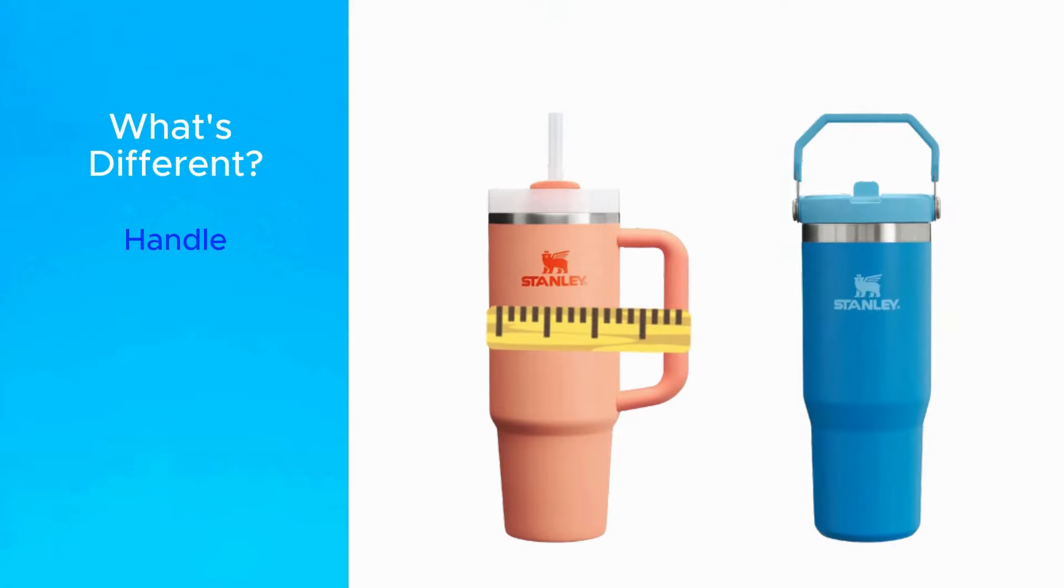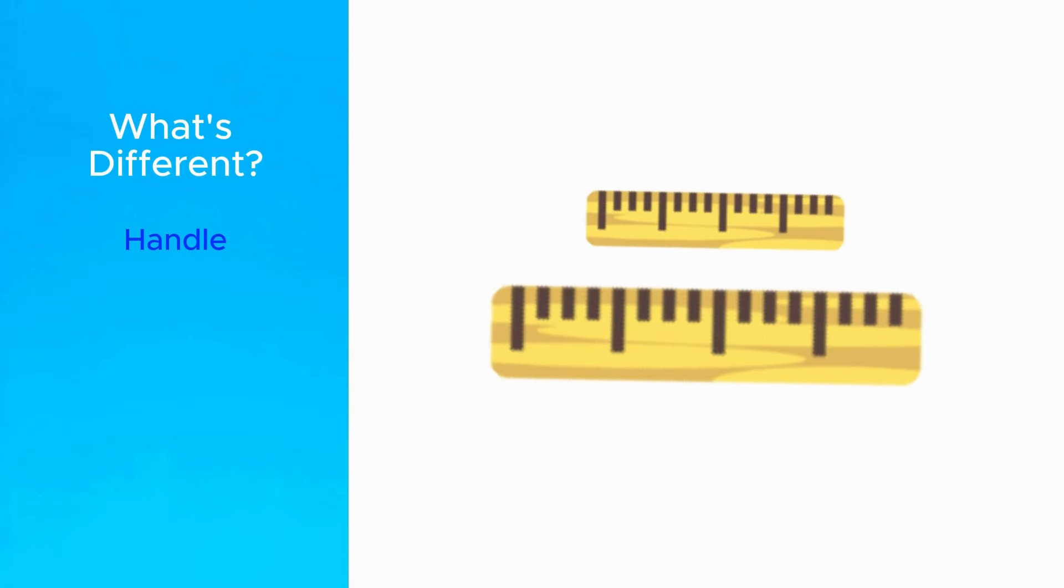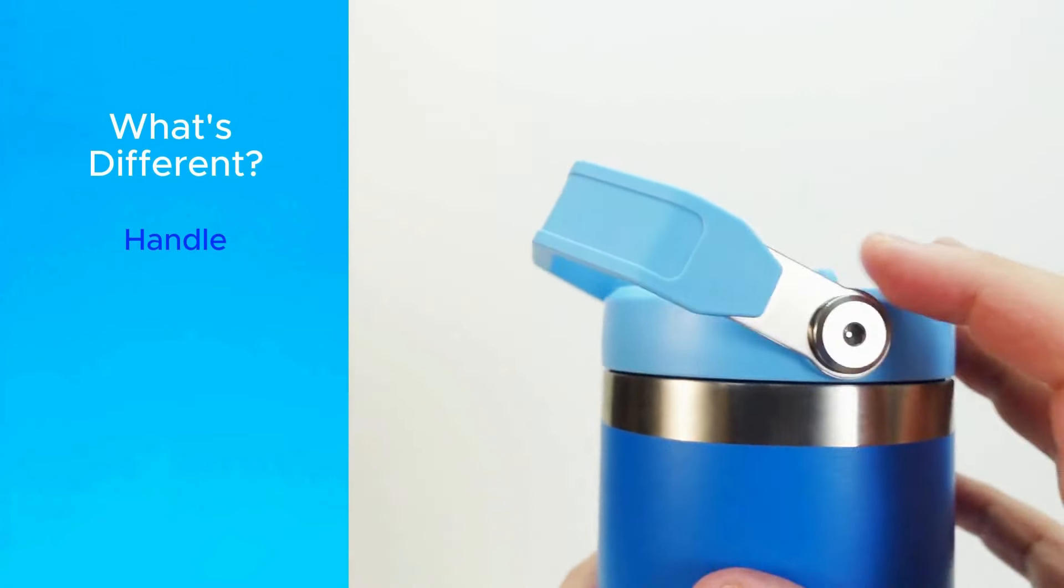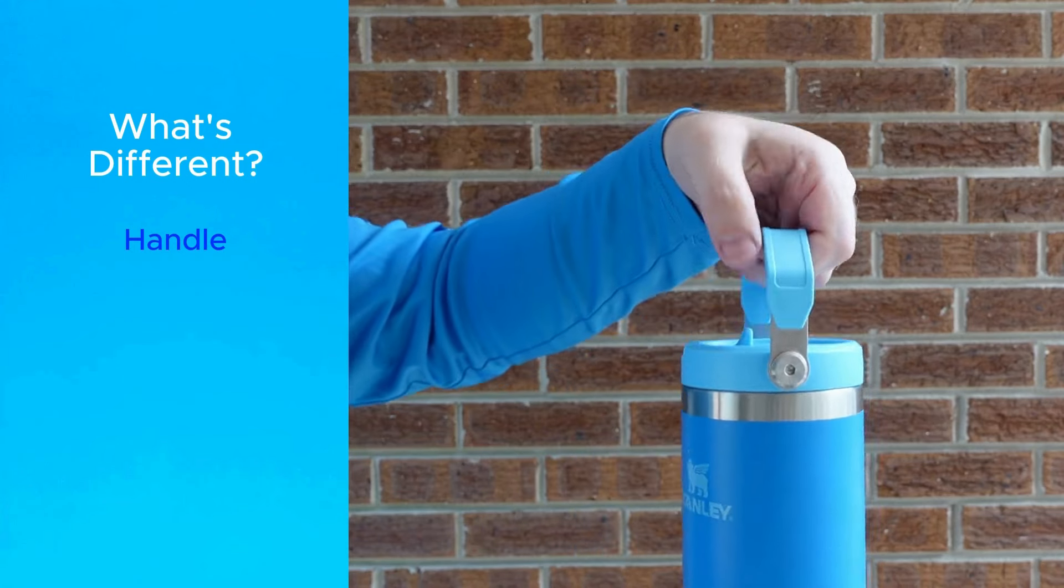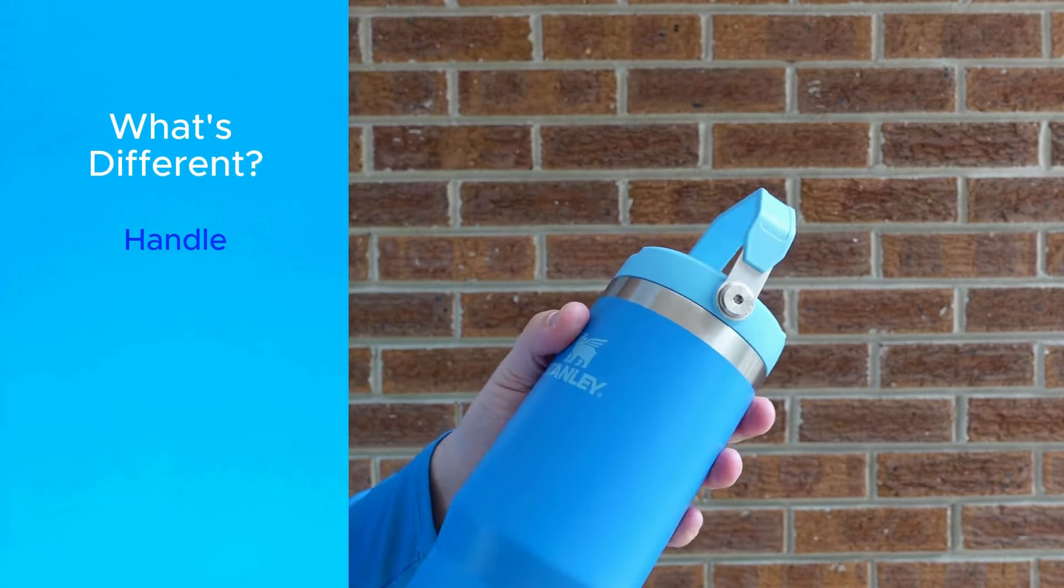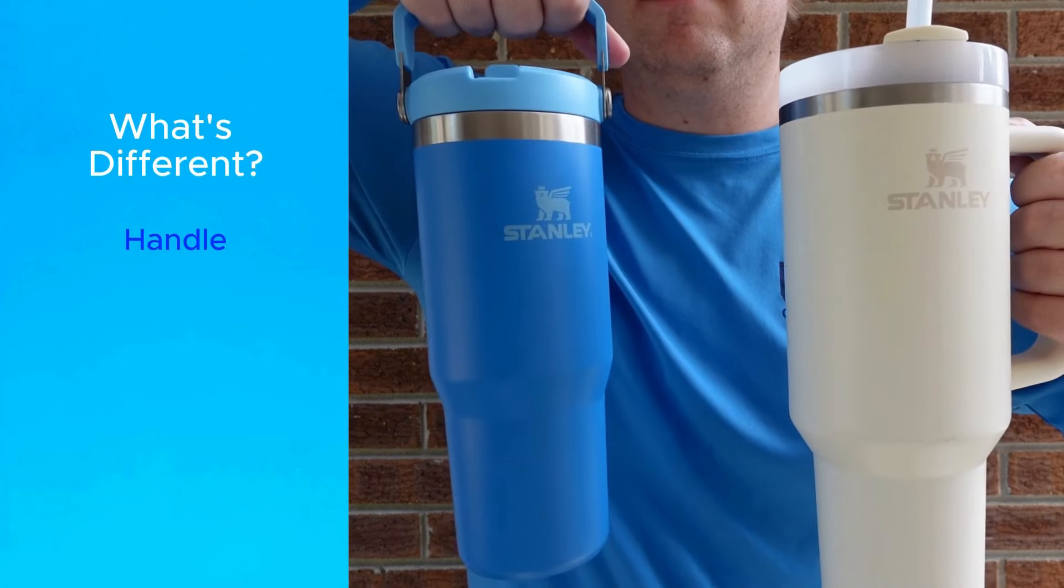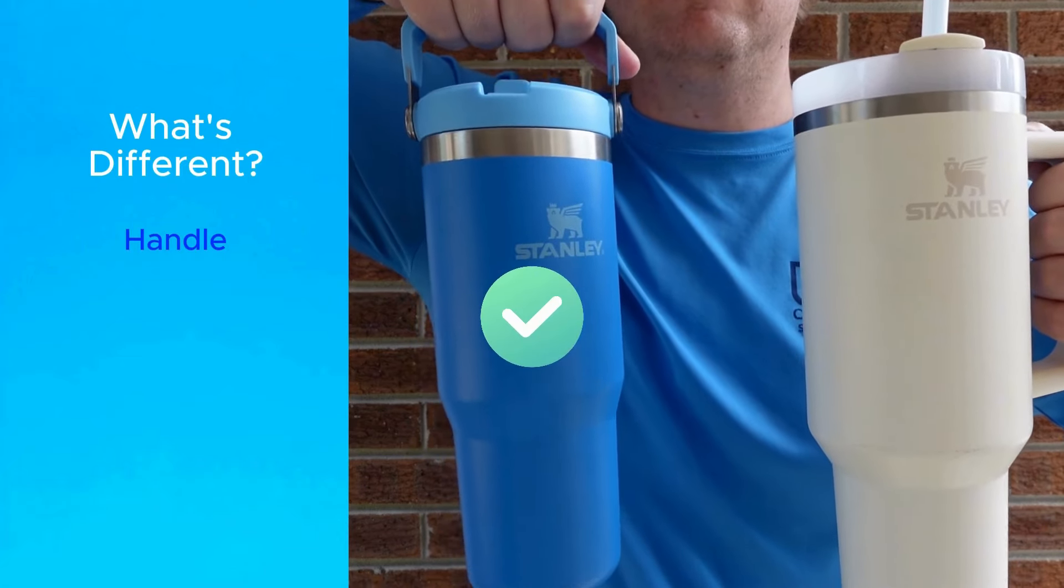Quencher's side-mounted handle style makes an already bulky bottle way bulkier, and I appreciate how the Iceflow handle slims down the design. It also makes Iceflow better for carrying around larger sizes like a 64-ounce tumbler because it's just easier to hold that much weight from above instead of off to the side.